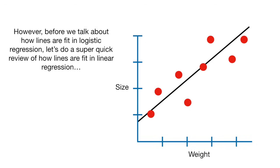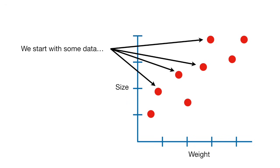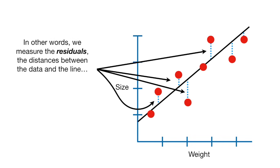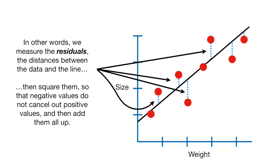However, before we talk about how lines are fit in logistic regression, let's do a super quick review of how lines are fit in linear regression. We start with some data and fit a line to it using least squares. In other words, we measure the residuals, the distances between the data and the line, then square them so that negative values do not cancel out positive values, and then add them all up.